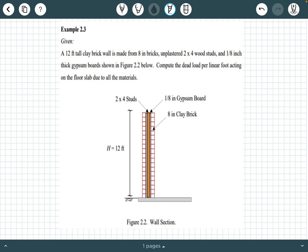What you're looking at is the side view or a section view of a clay brick wall. We've got two layers of clay brick, one on one side of the wall and one on the other side. On the interior we have two layers of 1/8 inch thick gypsum board, and then on the inside we have 2x4 unplastered wood studs.